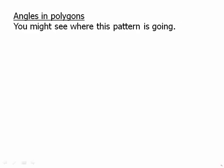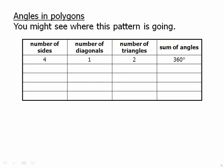You might see where this pattern is going. With a quadrilateral there are four sides and four vertices. From any vertex we can draw only one diagonal. That divides it into two triangles for a sum of two times 180 which is 360. For a pentagon from any one vertex we can draw two diagonals. That divides it into three triangles. So the sum of the angles is three times 180 which is 540. For a hexagon from any vertex we can draw three diagonals which divides the shape into four triangles and the sum of the angles is four times 180 which is 720.